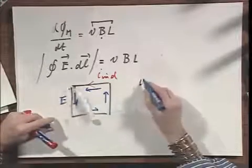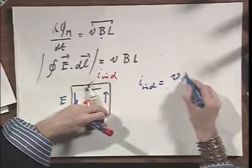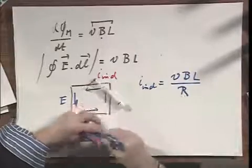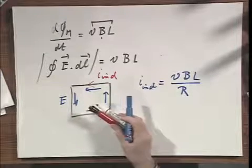And if you want to know what the induced current is, well, that is the EMF value, which is VBL divided by the resistance of this circuit, if R, capital R, is the resistance of that circuit.